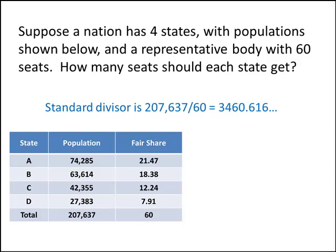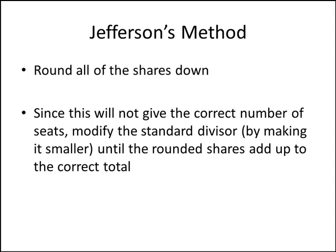Jefferson's method gives us a way to do that. Jefferson's method says to round all of the shares down, but of course that won't give us enough seats — it will give us a number of seats that's less than what we're looking for. So what we'll do is modify that standard divisor by making it smaller until the rounded shares add up to the correct total. Let's see how this works.